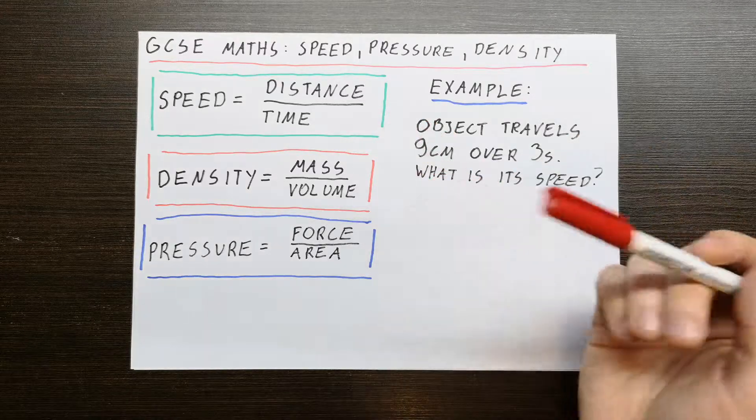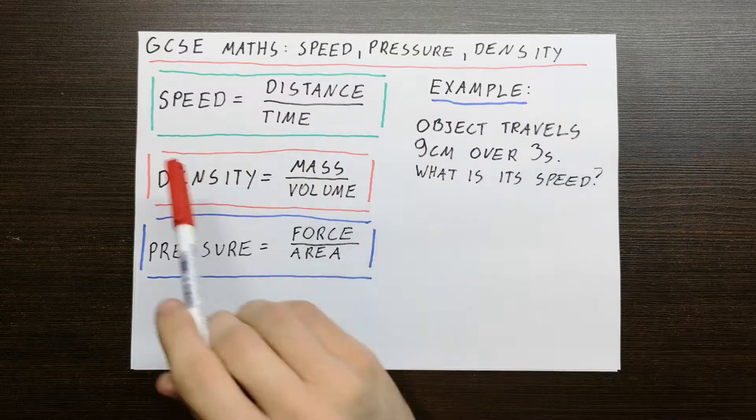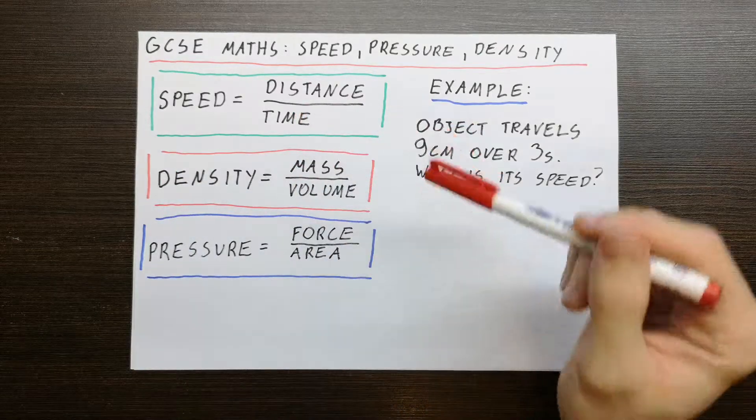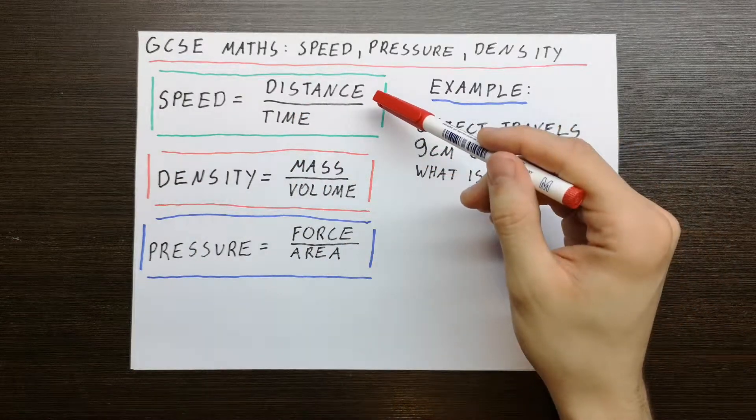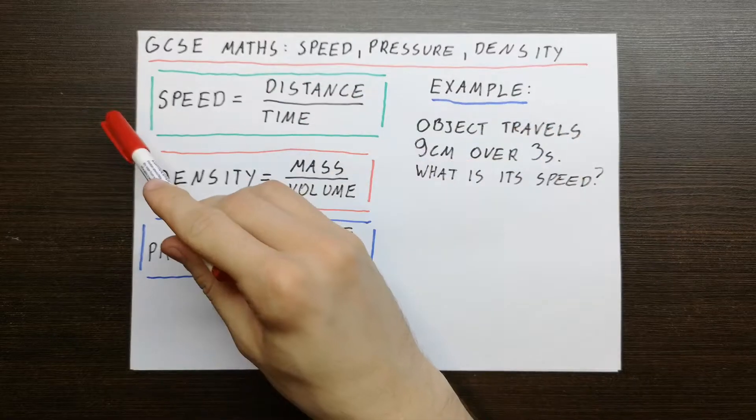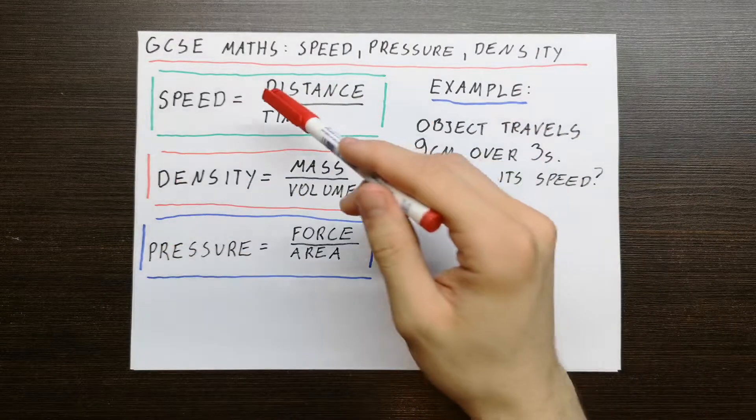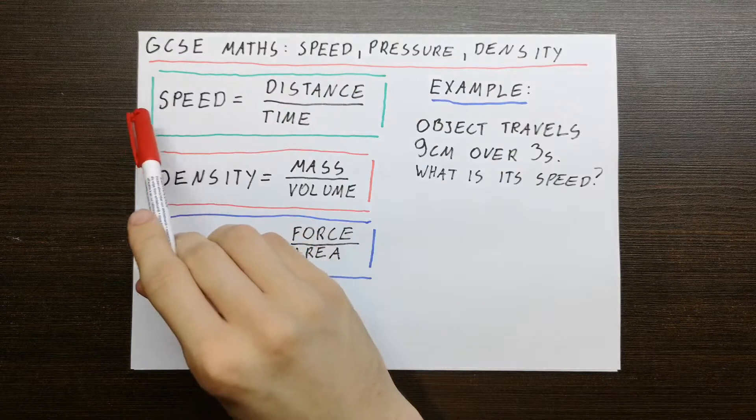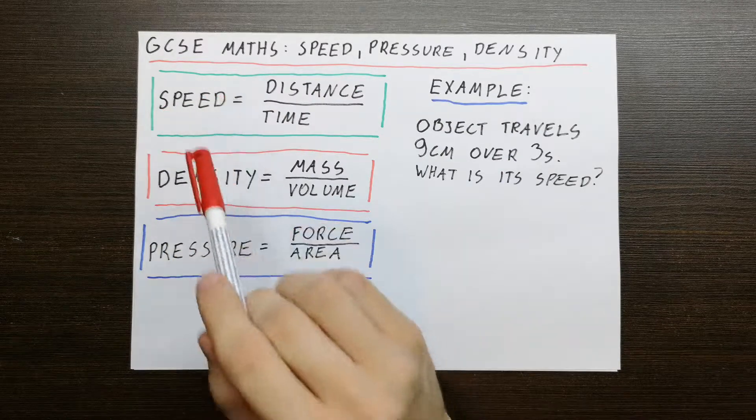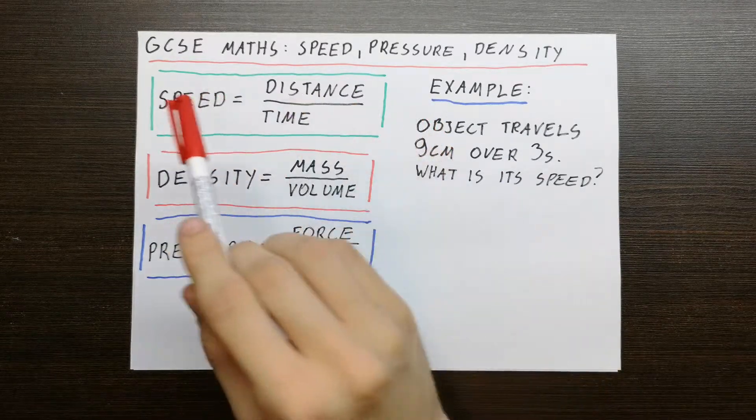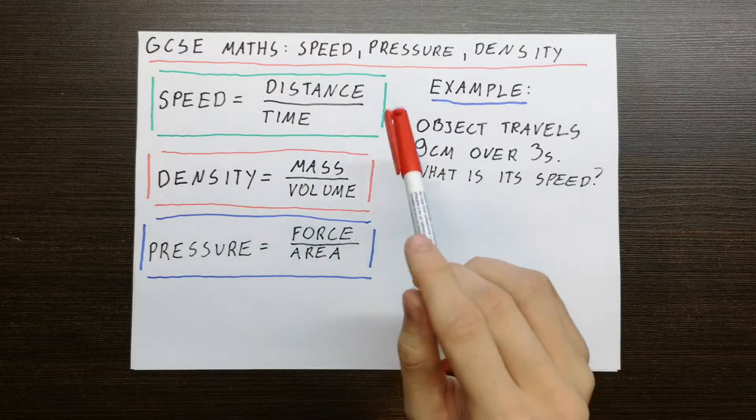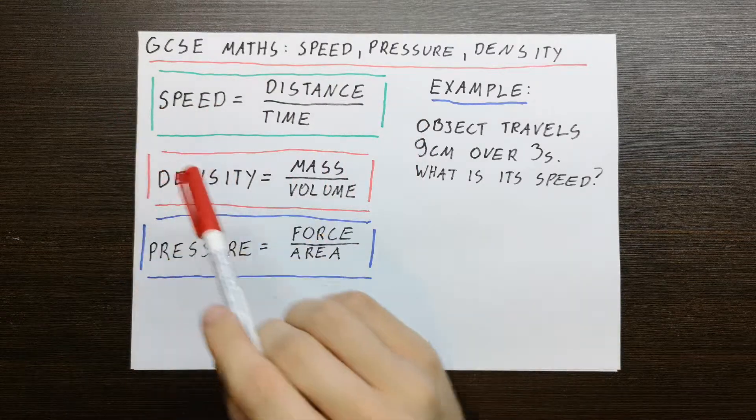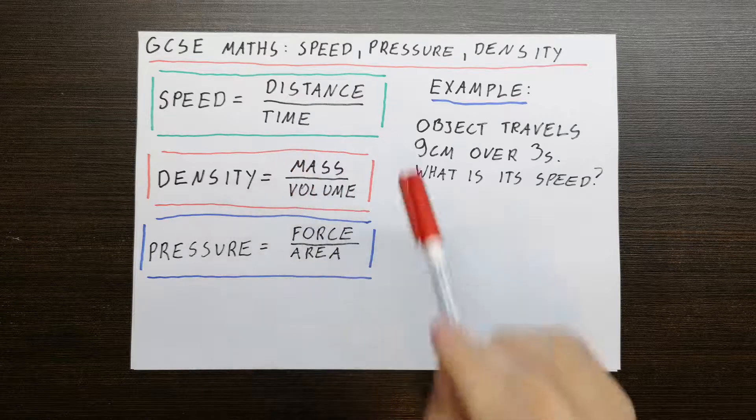If I want to find out time, I would first multiply both sides by time, so we would have distance equals speed times time. Then I would divide both sides by speed, so we have time equals distance divided by speed.